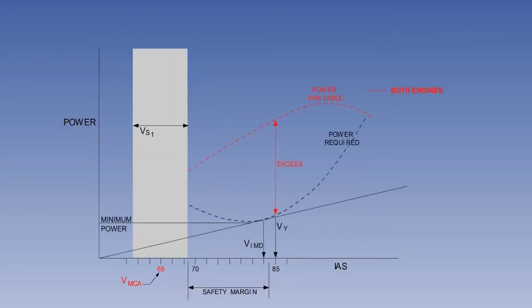Rate of climb is determined by the excess power available. Power is the rate of doing work, that is, thrust or drag times true airspeed, thrust and drag being forces, and TAS being the only real speed.